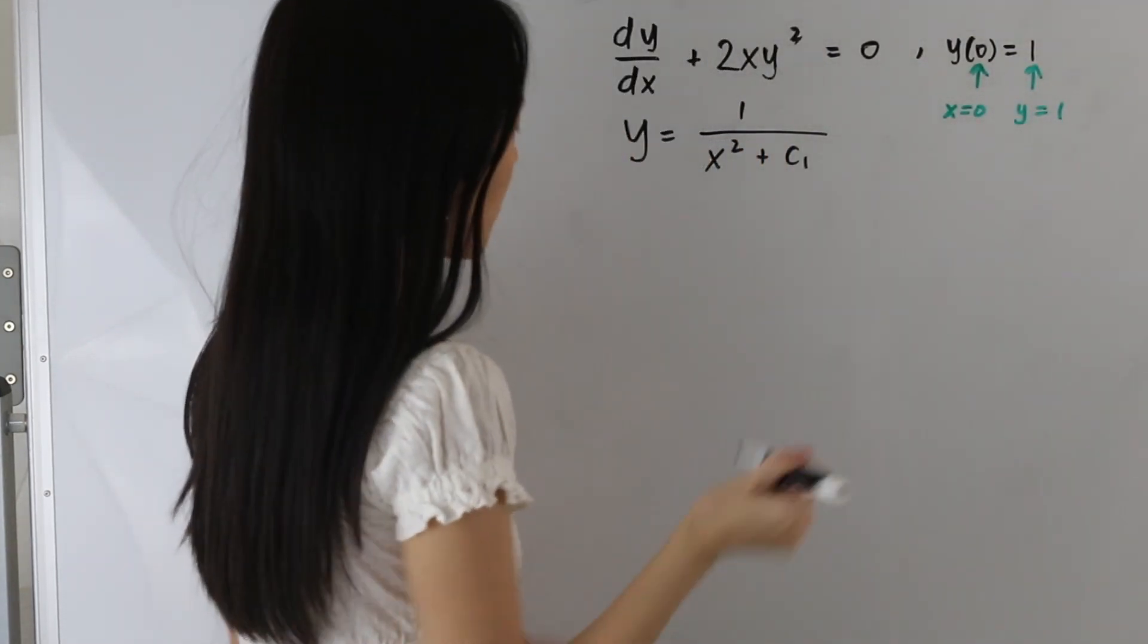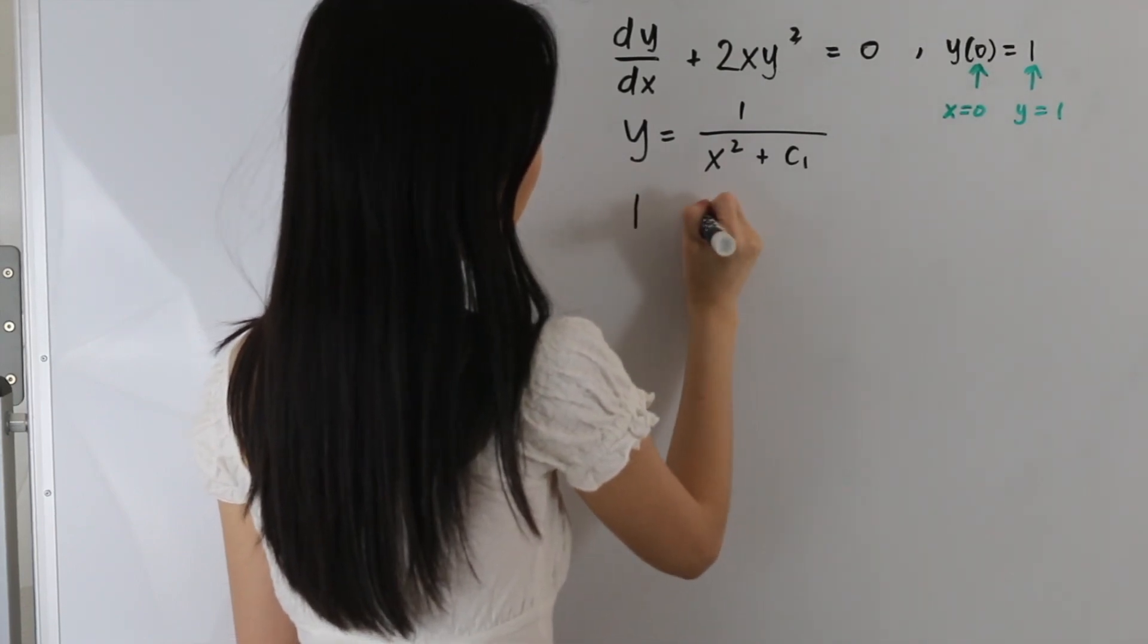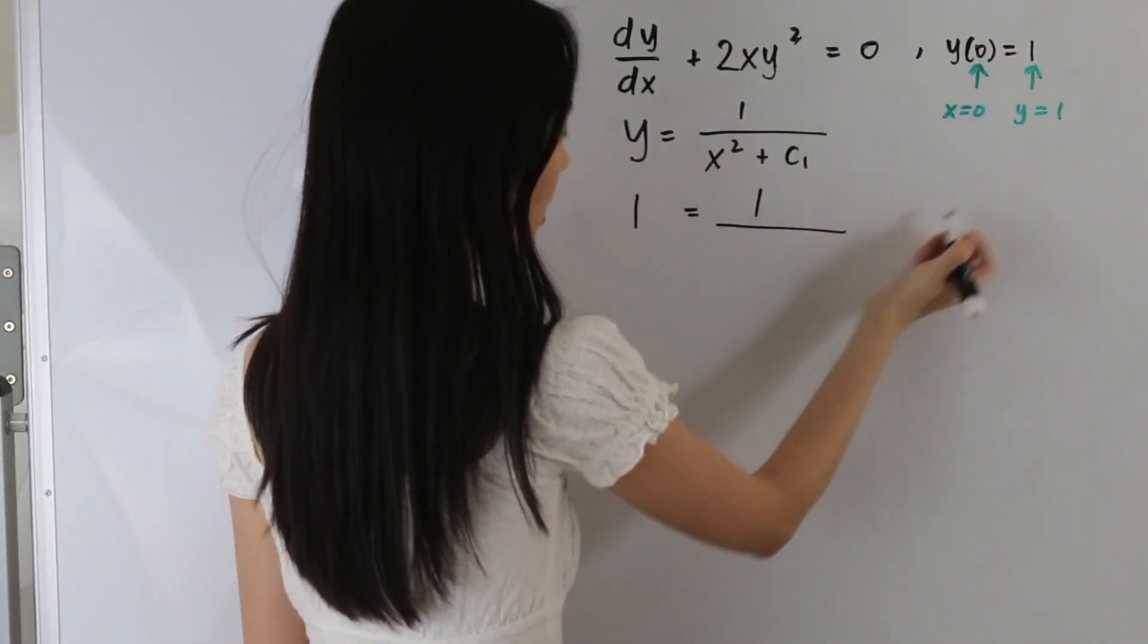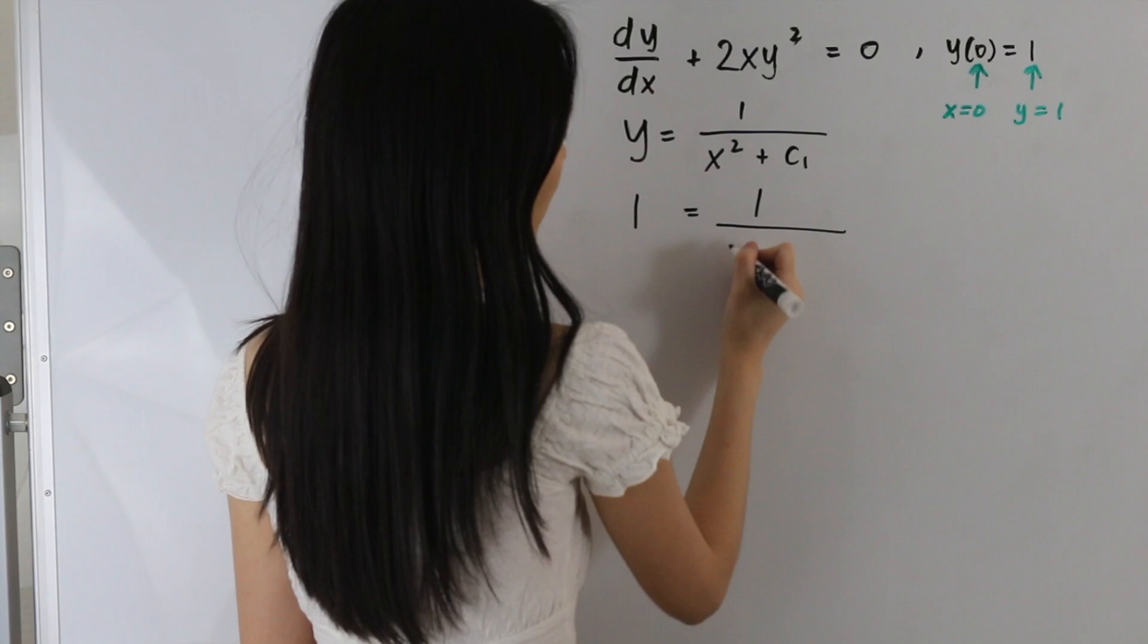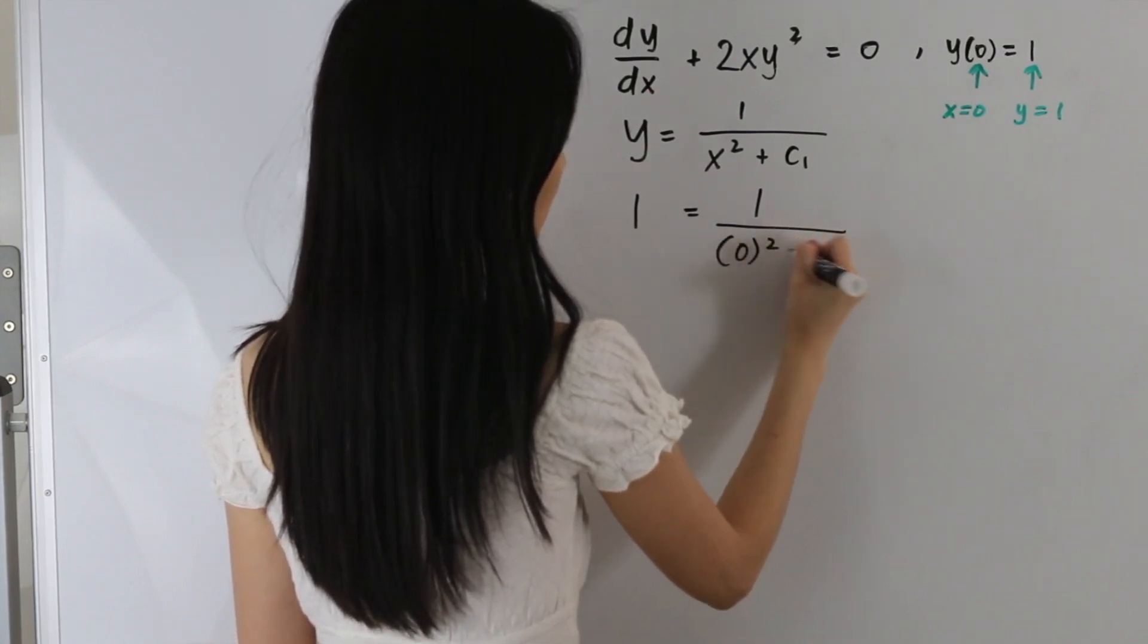So plugging in our values, we have 1 for y, and we have 1 over, and we have x is equal to 0, so we have 0 squared plus c1.